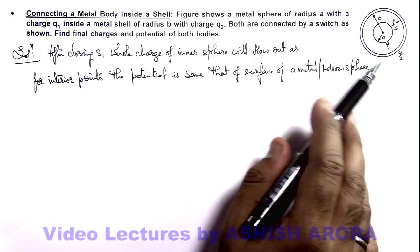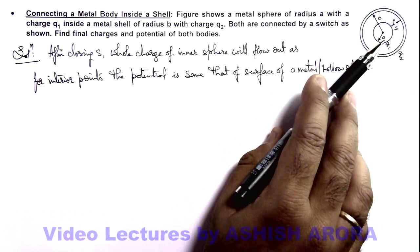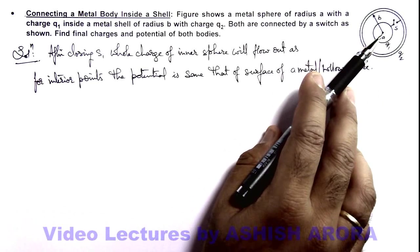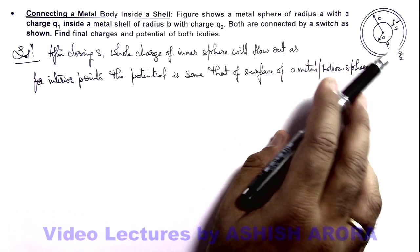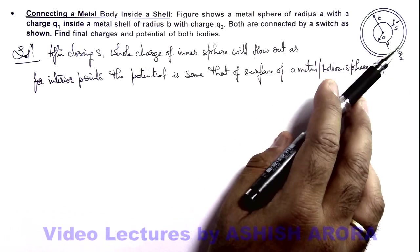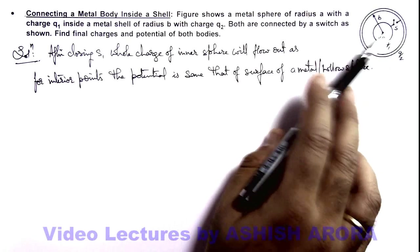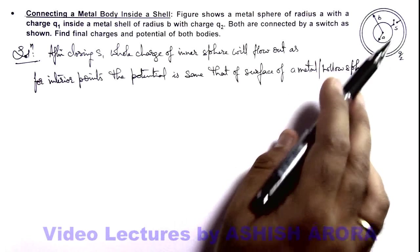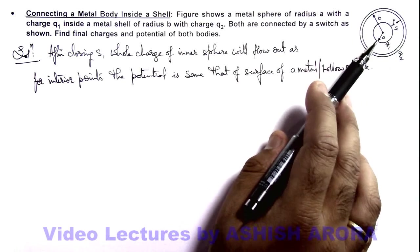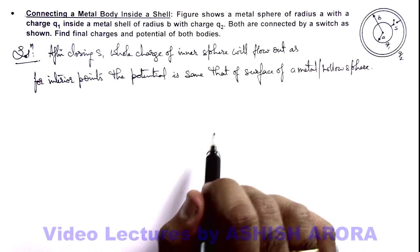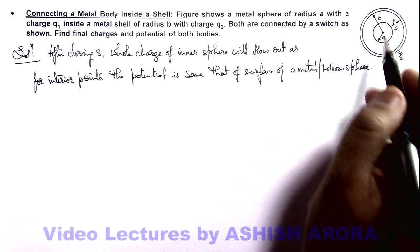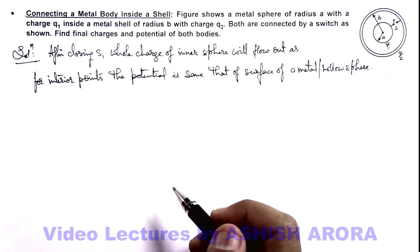So if the inner sphere is having some charge, on this inner sphere due to the outer shell there is the same potential which is on the outer surface, plus the potential due to its own charge. So it'll always be at higher potential if the inner body is charged. Therefore it'll always flow to the outer surface and the final potential will become equal.